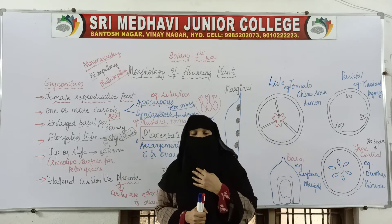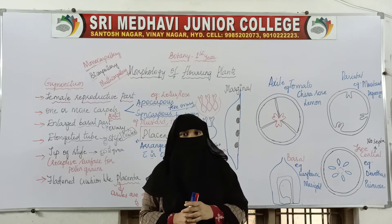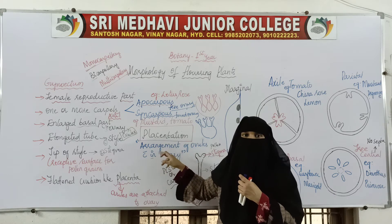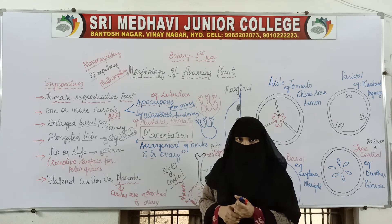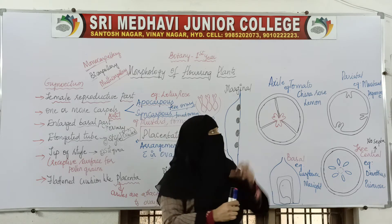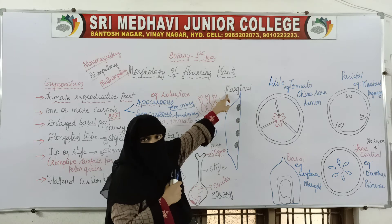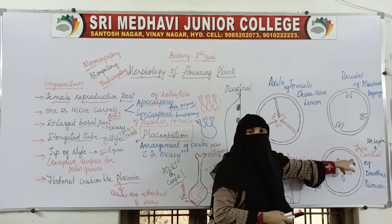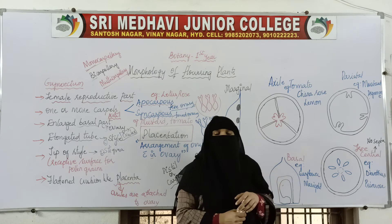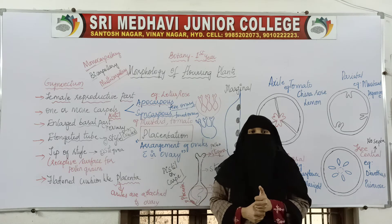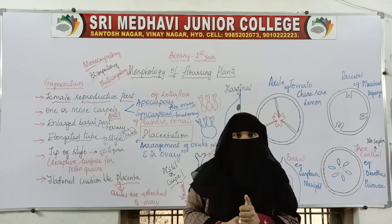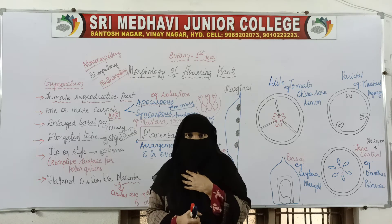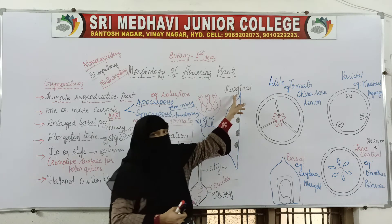These arrangements are of different types. The first type is marginal placentation, then axial placentation, then parietal placentation, then free central placentation, and finally basal placentation. According to how ovules are arranged inside the ovary, we have these different types of placentation.